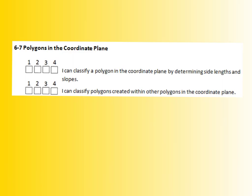6-7 is called polygons in the coordinate plane. This is why we had to review some of our information about midpoint, distance, and dealing with different things in the coordinate plane. Our first objective is going to be classifying a polygon in the coordinate plane by determining side lengths and slopes. And then the second thing we're going to have is classifying polygons created within other polygons in the coordinate plane. So you'll see this is going to be our last example here where they give you a shape in the coordinate plane. However, they ask you to do certain things with it to create a different polygon.